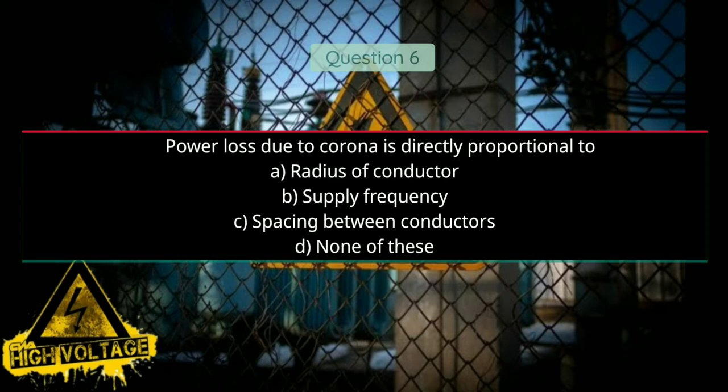Question number six: Power loss due to corona is directly proportional to — Option A: radius of conductor, Option B: supply frequency, Option C: spacing between conductors, and Option D: none of these. Answer will be B, supply frequency.